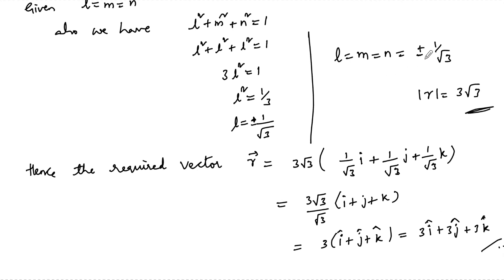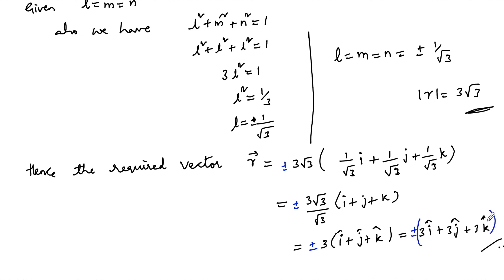Since the direction cosines are ±1/√3, we can also consider the negative case. So the required vector can be plus or minus (3i + 3j + 3k).